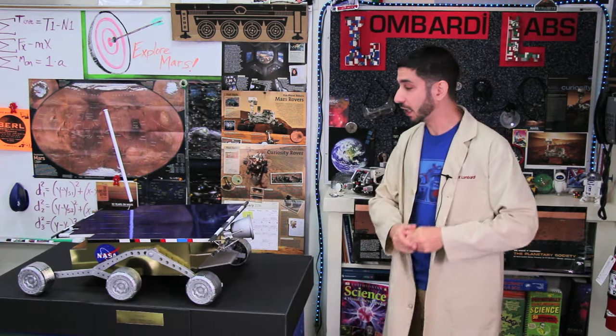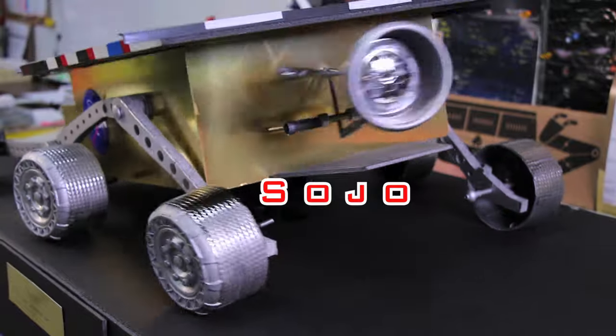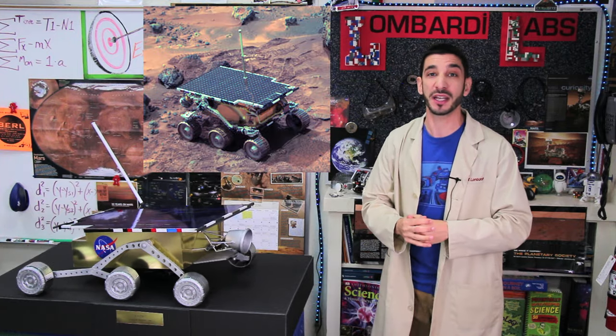This time I'd like you to meet Sojo, a cousin of Sojourner, the first robotic rover on Mars. Only this is not a robot. It's not even remote controlled. Sojo is a puppet.